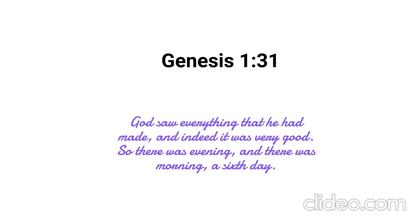God saw everything that He had made, and indeed it was very good. So there was evening, and there was morning, a sixth day. At the close of the sixth day, everything had been created and put into perfect order. When God looked at the pieces of everything that He created on the first five days, He said that it was good. But, as we see here, when everything is done and put into His order, we see that it was very good. That is a reminder to us that we may have and do some good things, but that is not what God wants for us. What God desires for each and every one of us is the 'very good,' which comes as His creation is in line with His will. We also see that the number six is associated with man or earthly completeness. Throughout the rest of the Bible, we will be reminded of this and it will help us to understand the things of God.